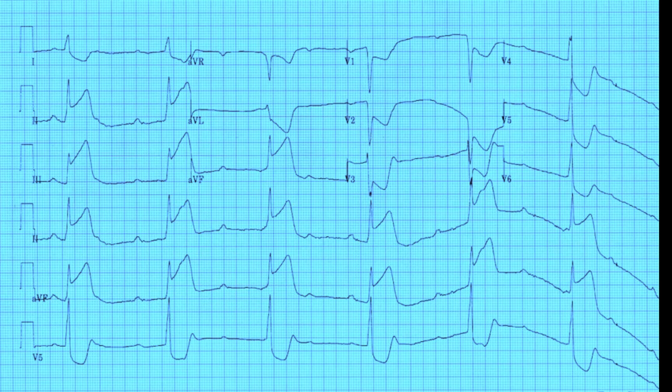In this ECG, make a mental note that these are junctional escape beats — the QRS complexes are arising from the AV node because complete heart block is present and the P waves are not conducting through the AV node into the bundle of His to stimulate the ventricles. The heart has to sustain life: if the SA node stops firing, the atrium takes over; if the atrium stops, the AV node takes over with AV nodal rhythm; if that doesn't work, the ventricles will try to sustain life with ventricular escape beats.